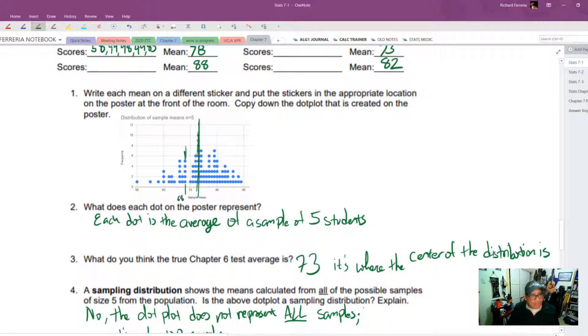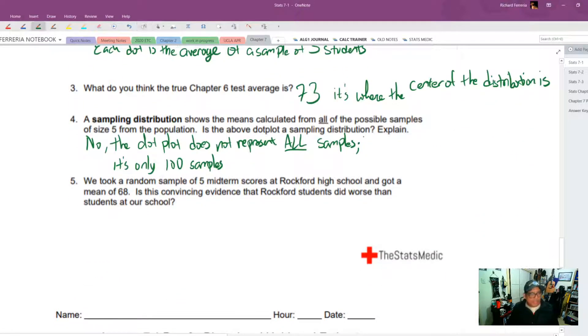How many of our students were 68 or worse? How many of our samples are 68 or less? So we've got one, two, three, four, five, six, seven, eight, nine, ten, eleven, twelve, thirteen, fourteen, fifteen, sixteen, seventeen, eighteen, nineteen, twenty, twenty-one, twenty-two, twenty-three. We have twenty-three out of a hundred samples that are less than or equal to 68. Okay, that's not rare.